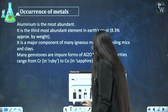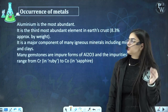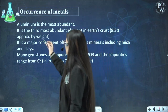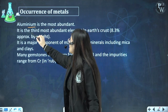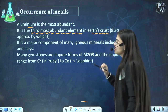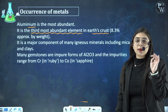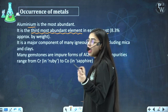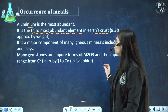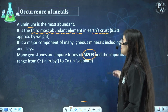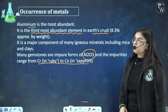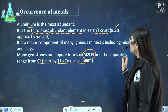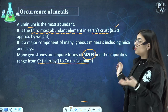Now moving on to the occurrence of metals. Talking about abundance: Aluminium is the most abundant metal and the third most abundant element in earth's crust, holding about 8.3% by weight. It is a major component of many igneous minerals including mica and clays. Many gemstones are impure forms of Al2O3, and impurities range from chromium to cobalt.